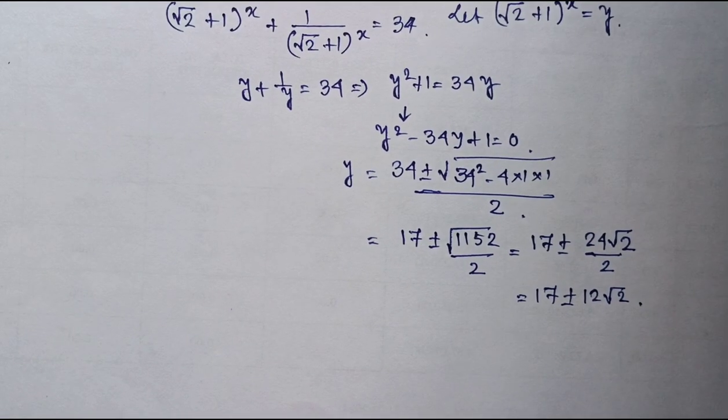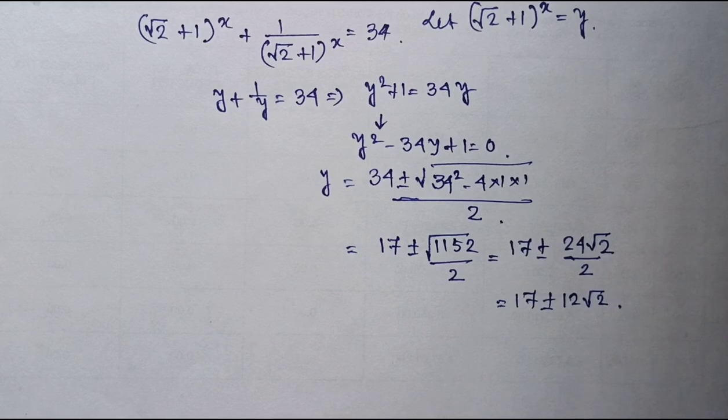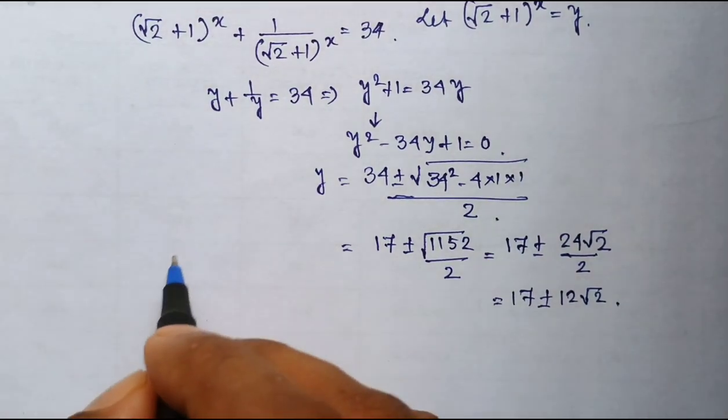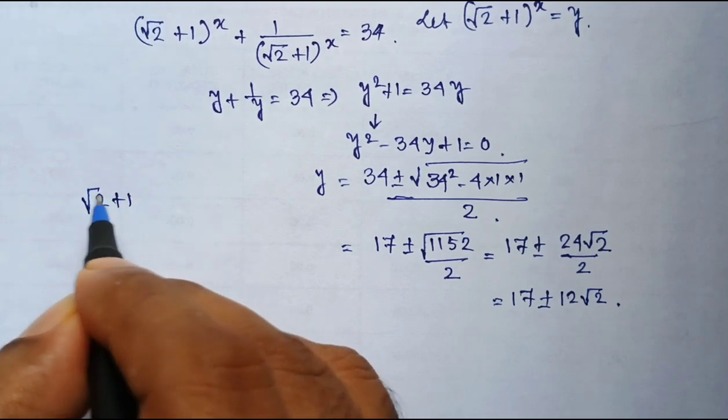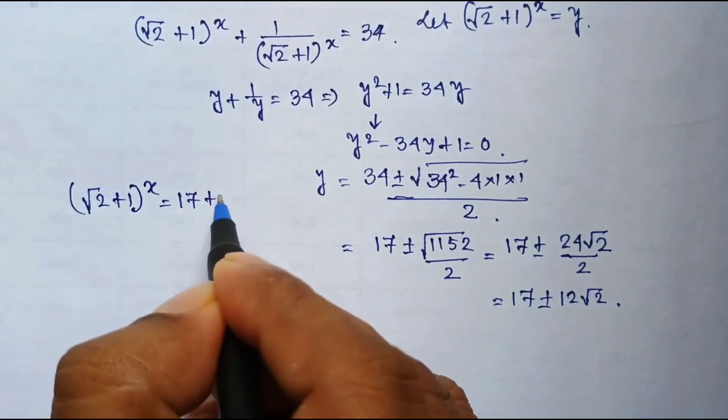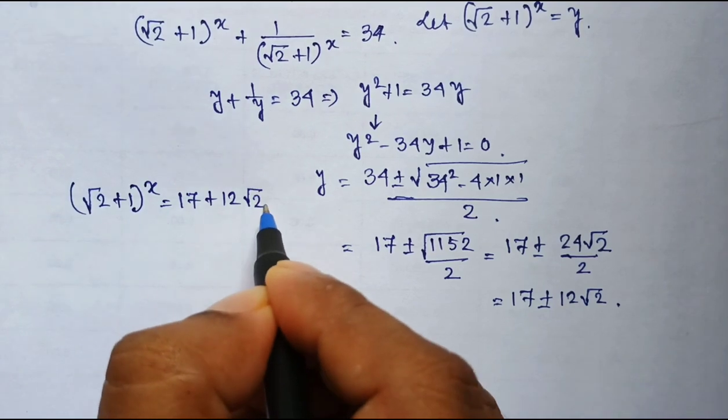Since I have to find a value of y, that is x, which is greater than 0, so now I can write it that square root of 2 plus 1 whole to the power x equal to 17 plus 12 root 2. I am taking the positive root.